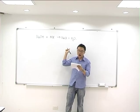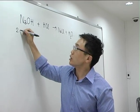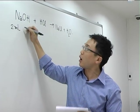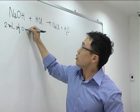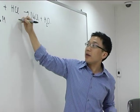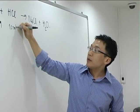If we have two milliliters of 0.5 molar sodium hydroxide and ten milliliters of 0.2 molar hydrochloric acid...